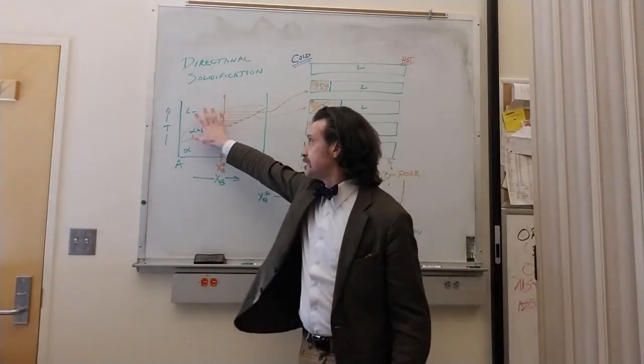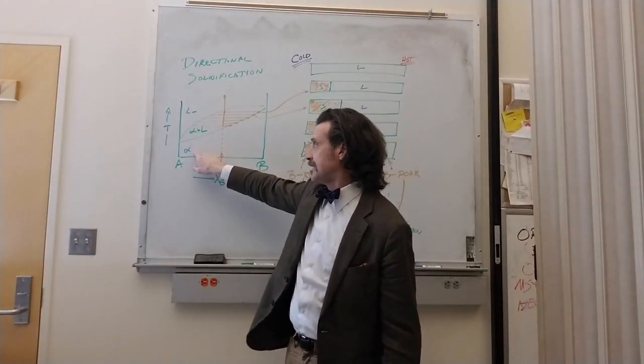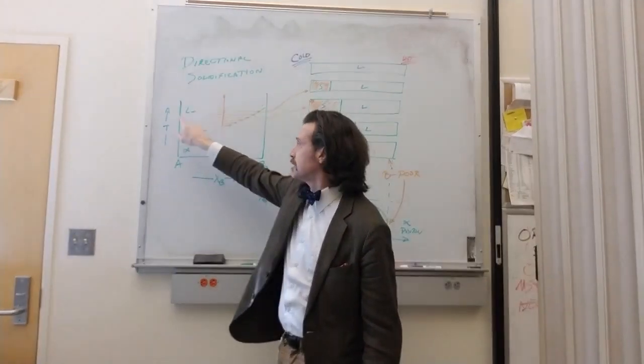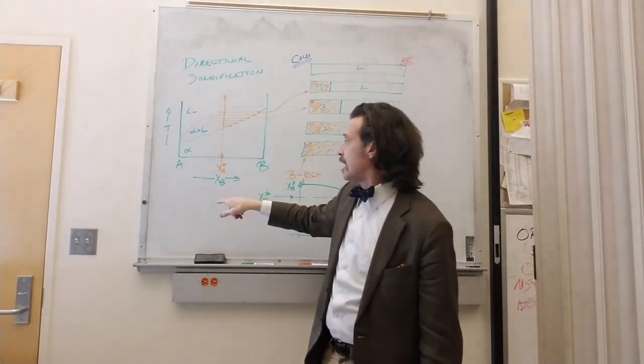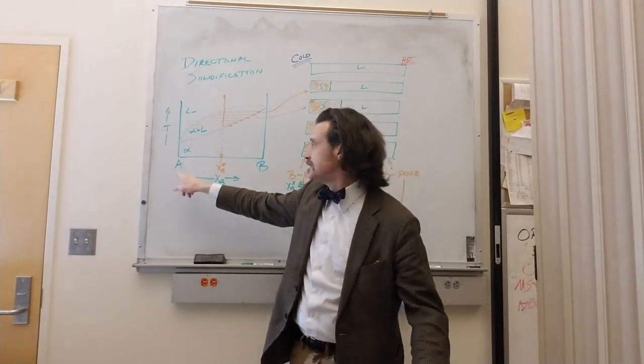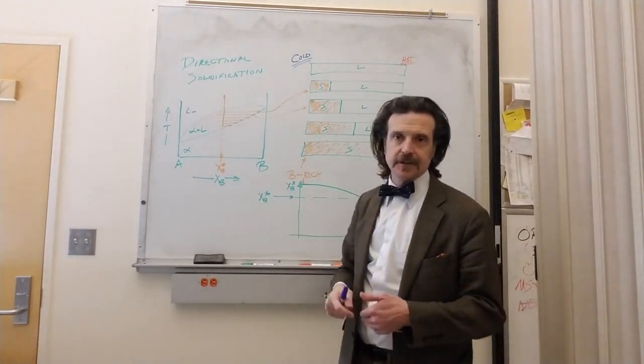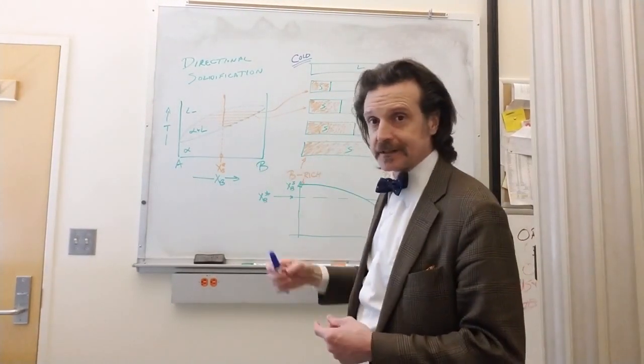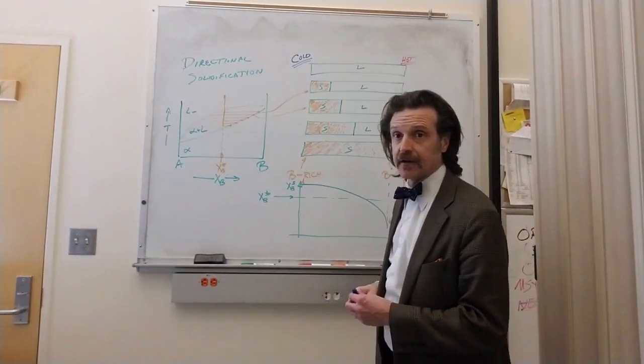I'm going to be talking about this simple phase diagram which just has an alpha phase, a liquid phase, and an alpha plus liquid region, and I'm using components A and B. There's lots of other things you can work with here, but just A and B, and this simple phase diagram.